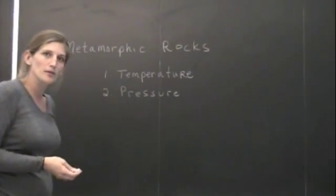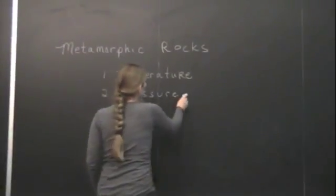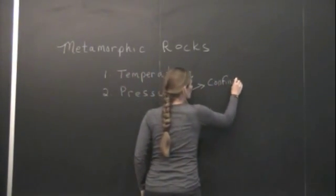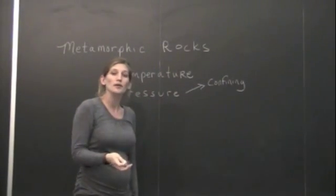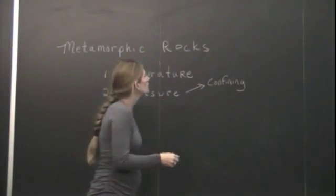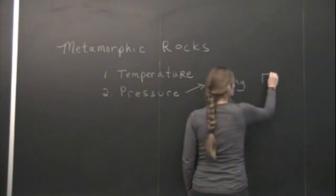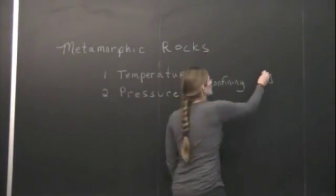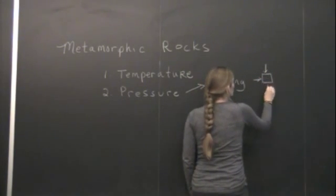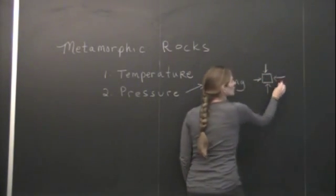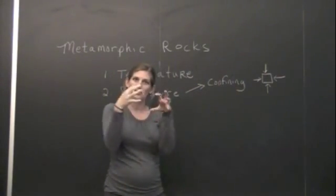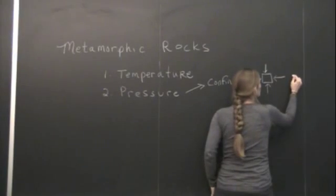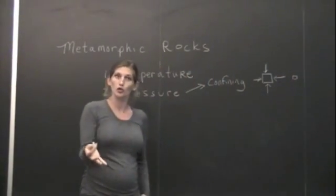The two types of pressure that we look at—we have confining pressure. Confining pressure is what we really see happening as we go deeper down in the crust. If we were to take a box and we were to start to apply confining pressure to it, the force is going to be directed in the same way in all three dimensions. We can imagine this cube getting squeezed down, so the result is going to be a much smaller, more compact cube.